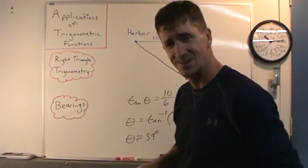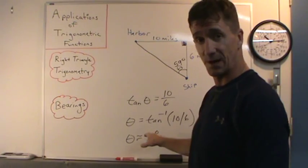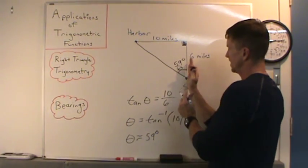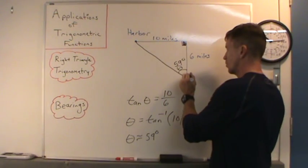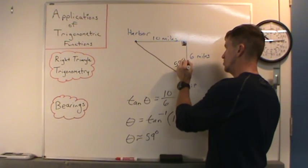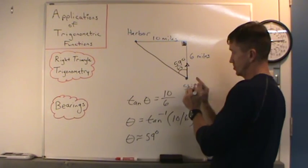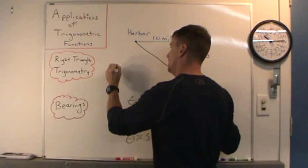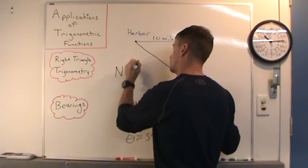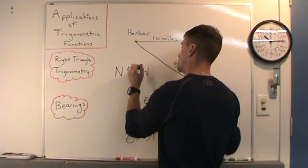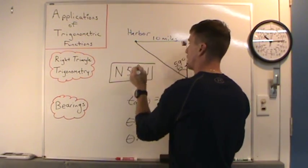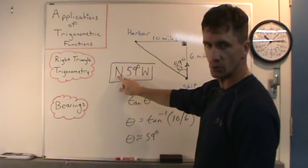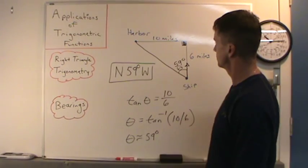Did we answer the question? Recall the question was to find the bearing — we've got to write this as a bearing. We look at this and call this due north. It's to the west of due north, so we write N 59 degrees W. This is our bearing from the ship to the harbor: 59 degrees west of due north. That's our bearing.